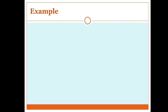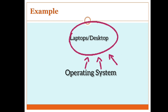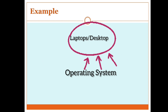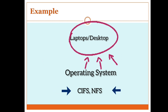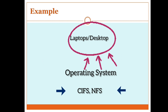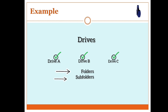In our laptops or systems there is an operating system, and in any operating system there is a built-in file system like CIFS or NFS. Whatever data we have, we can save it in the form of files in different drives like A, B, C, and in those drives we can further make folders or subfolders to save our data — that is, we are managing the data in a hierarchical form.